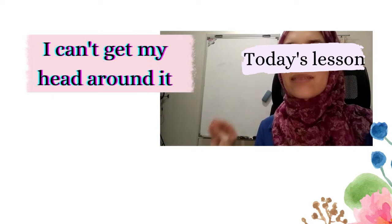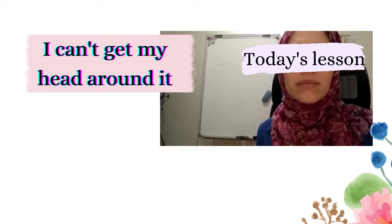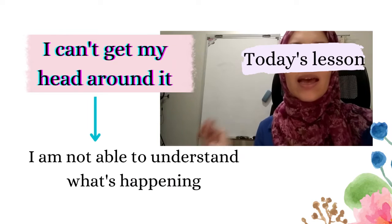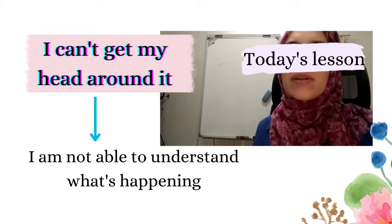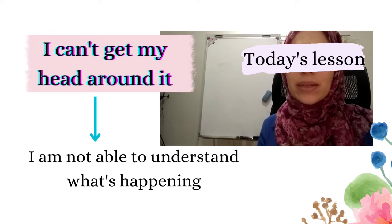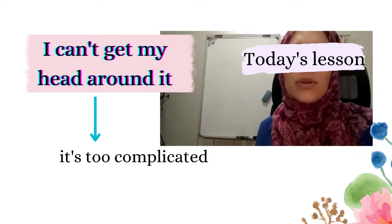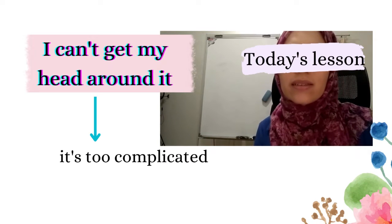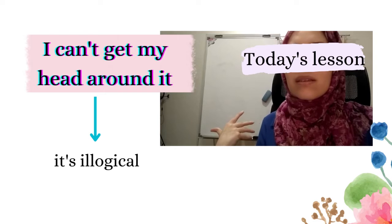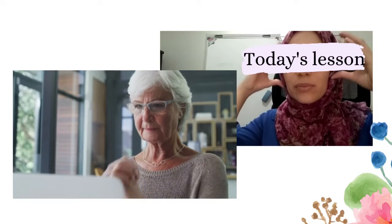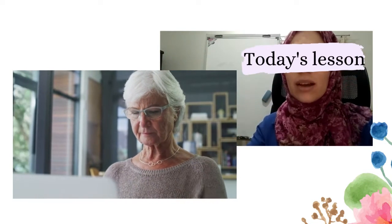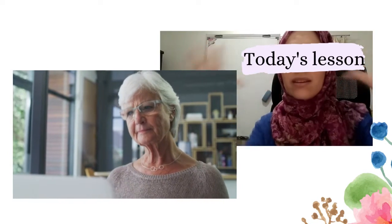Number three: 'I can't get my head around it.' This means you are not able to understand what is happening, maybe because it is too complicated or illogical — it's really hard for your brain to accept the idea or understand the concept. So in this case you can say 'I can't get my head around it.'